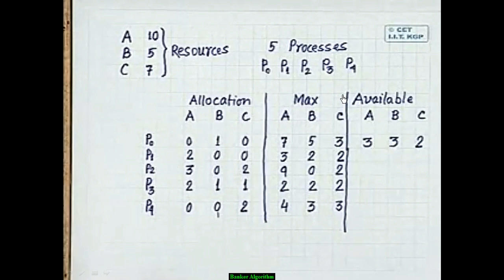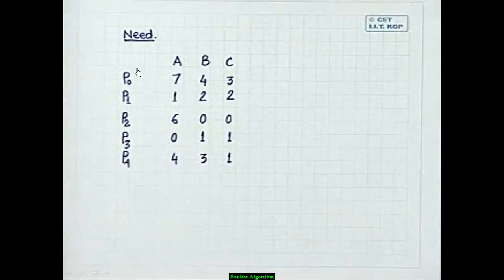Next, calculate the Need matrix as Max minus Allocation for each process. For example: 7−0=7, 5−1=4, 3−0=3; then 3−2=1; and so forth. This gives us the full Need matrix.